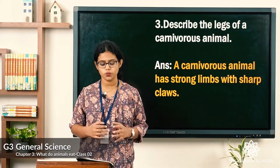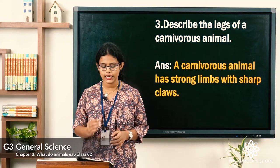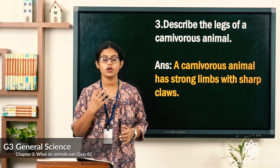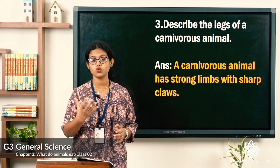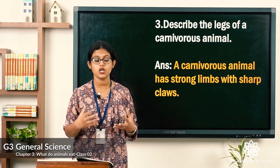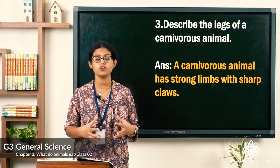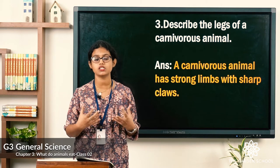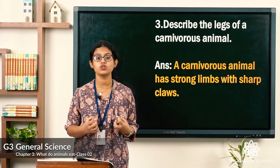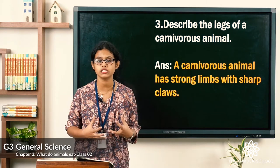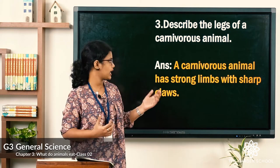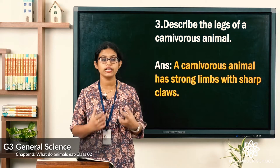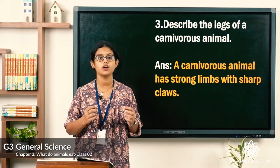Third: describe the legs of a carnivorous animal. We learned that carnivorous animals have sharp teeth, good eyesight, and strong and sharp claws — in order to hold the animal tightly while hunting. So the answer is: a carnivorous animal has strong limbs with sharp claws.